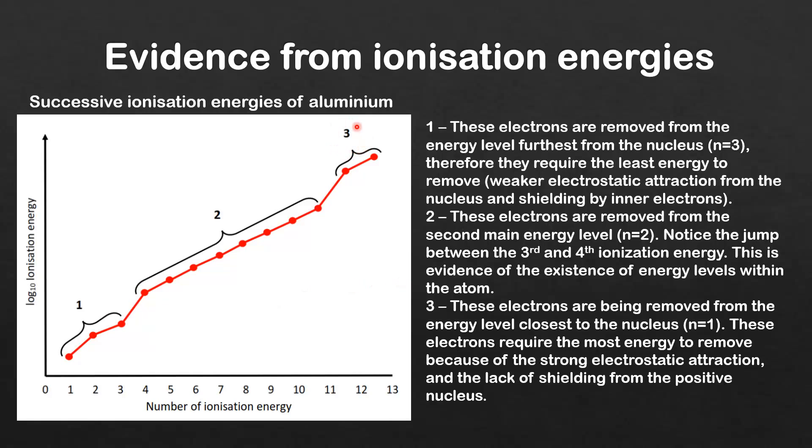Finally, we have band three. These electrons are being removed from the energy level closest to the nucleus (n=1). These electrons require the most energy to remove because of the strong electrostatic attraction and the lack of shielding from the positive nucleus.